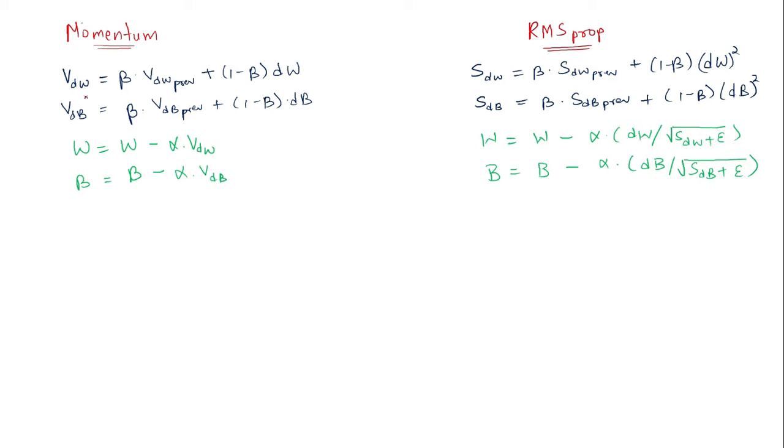For Adam optimizer, we combine both momentum as well as RMS prop into one single equation. The weight updation in Adam will be given by combining both the vdw of momentum and this term from RMS prop into one, and it will be given by vdw divided by square root of sdw plus epsilon.